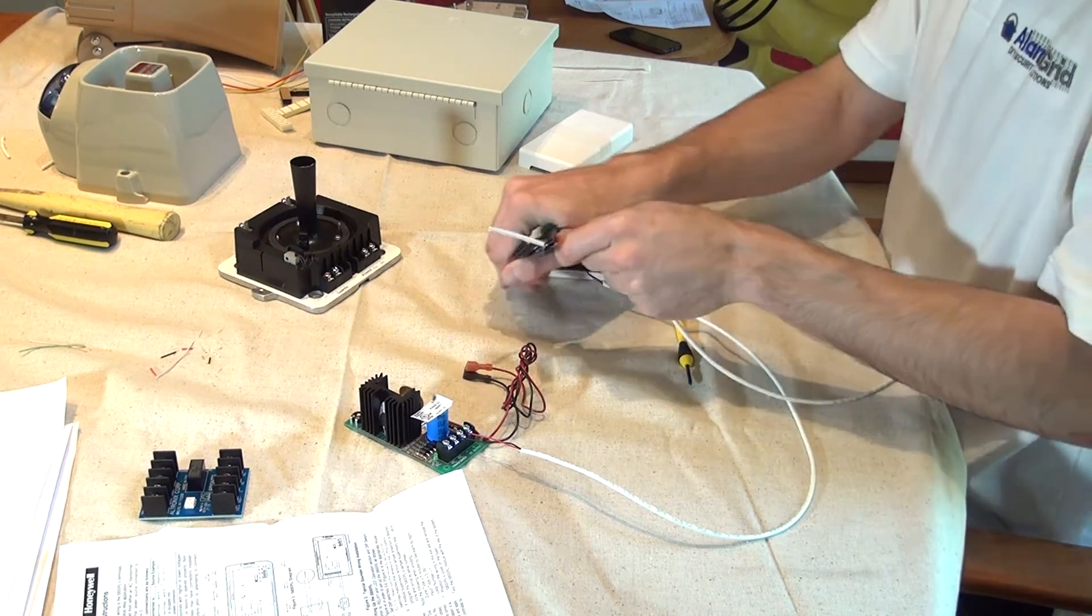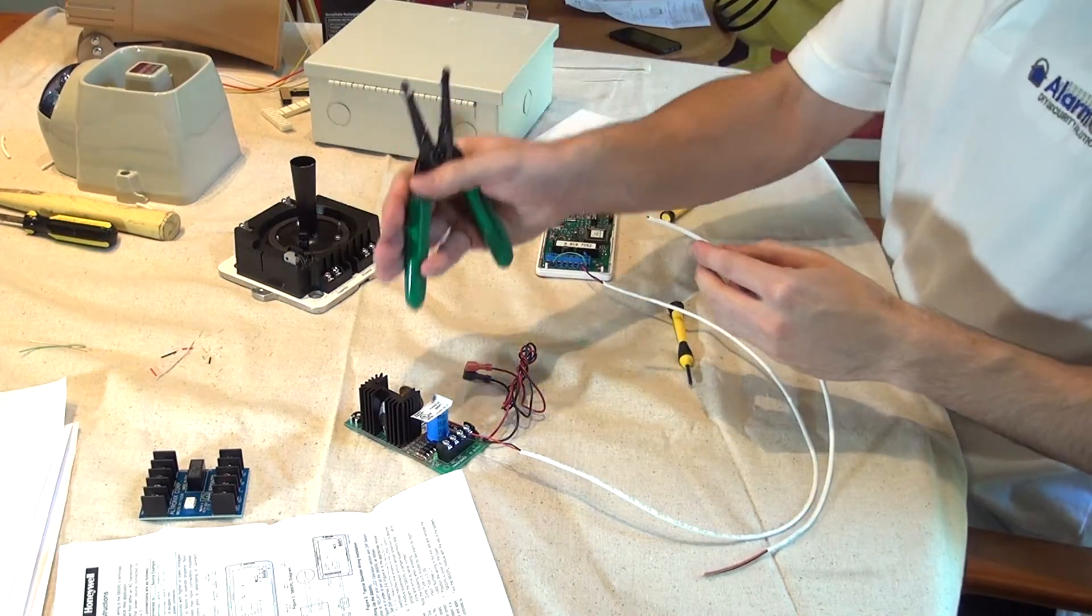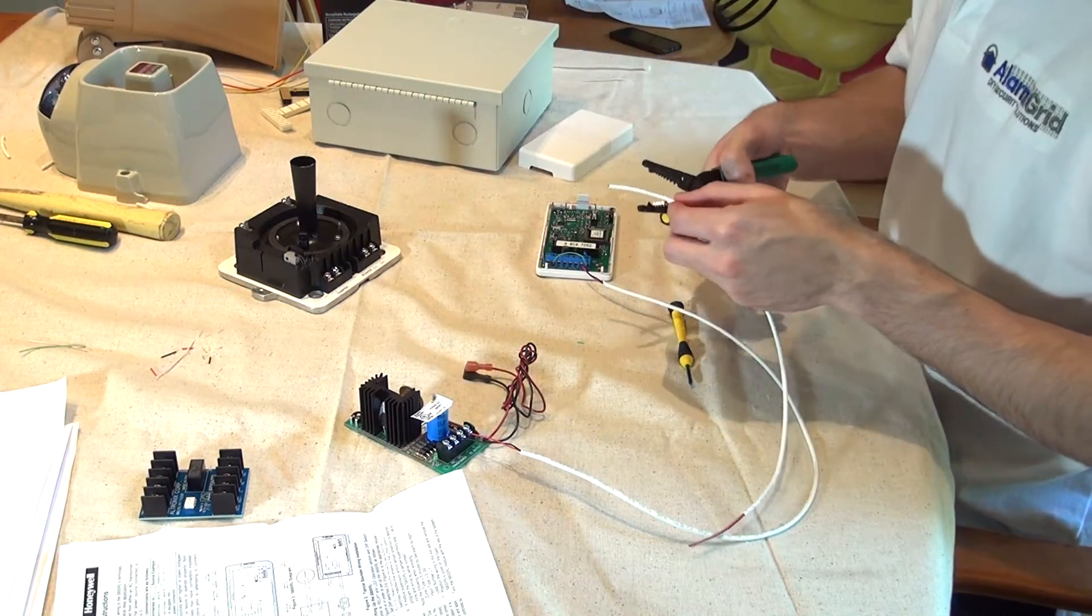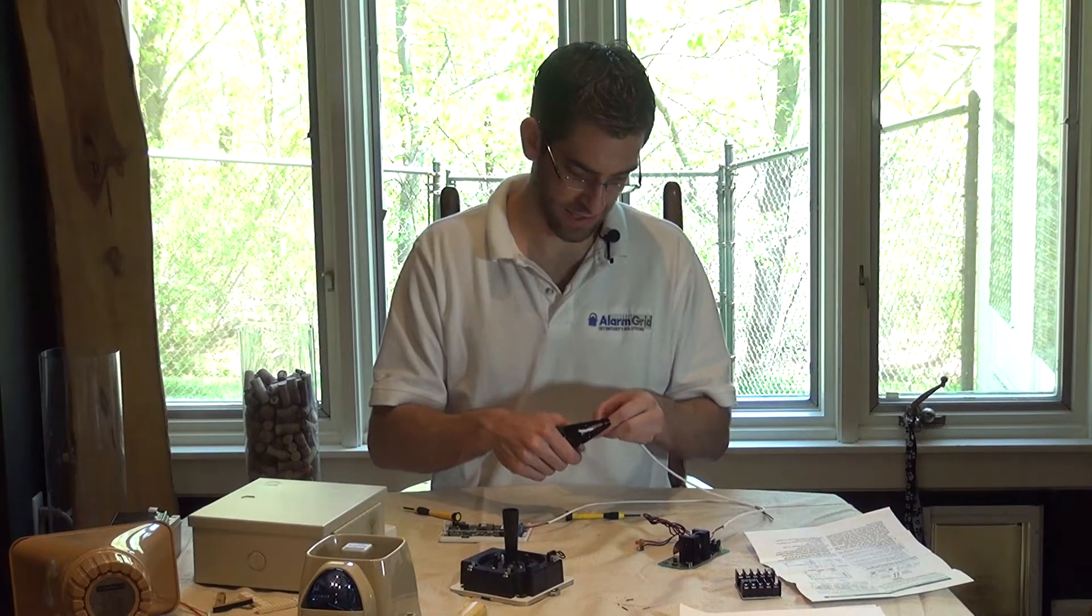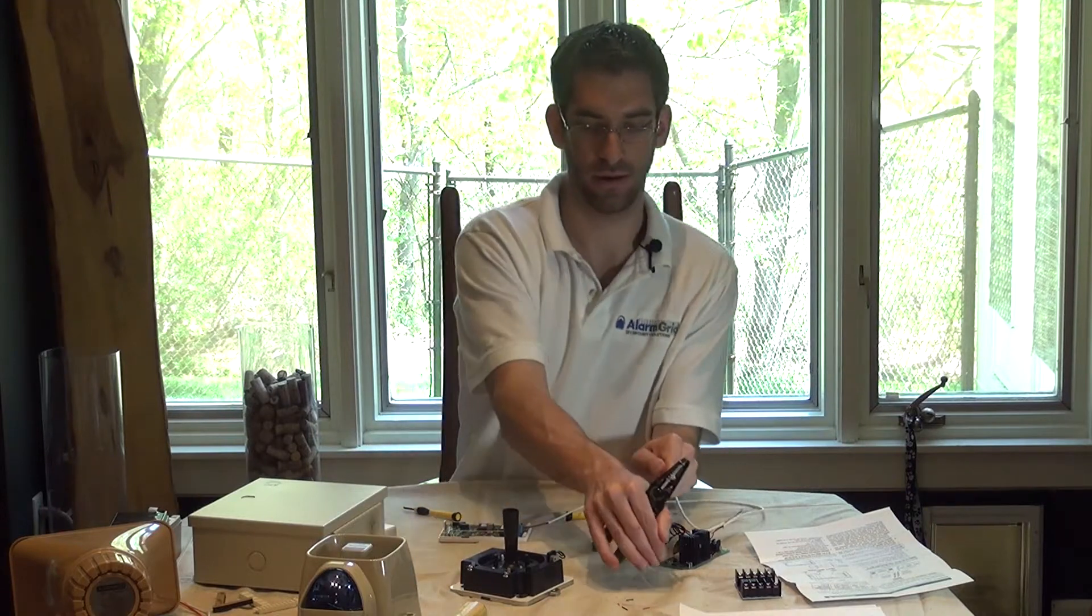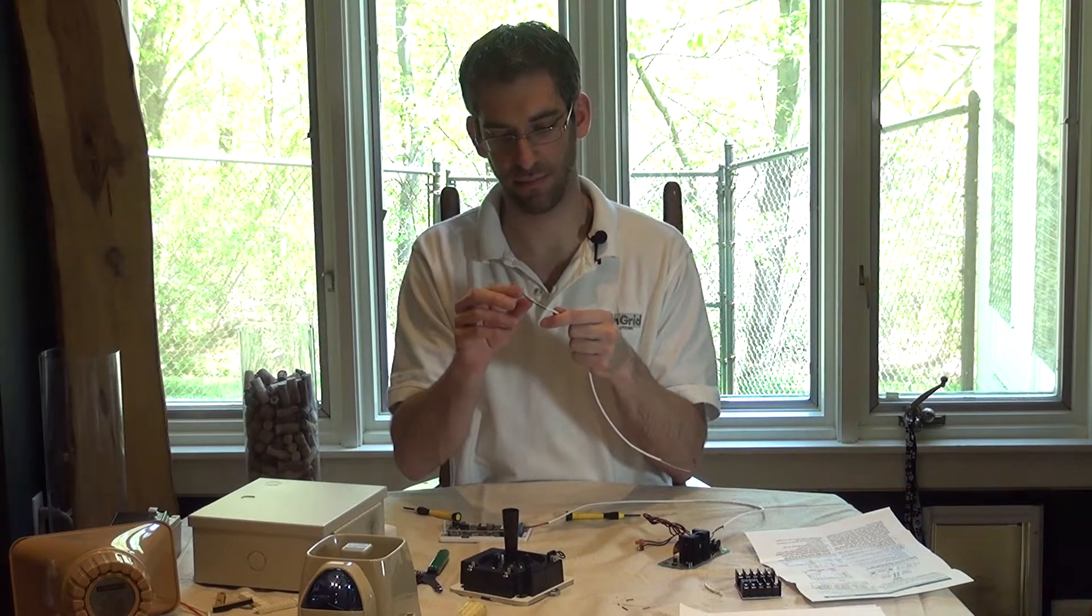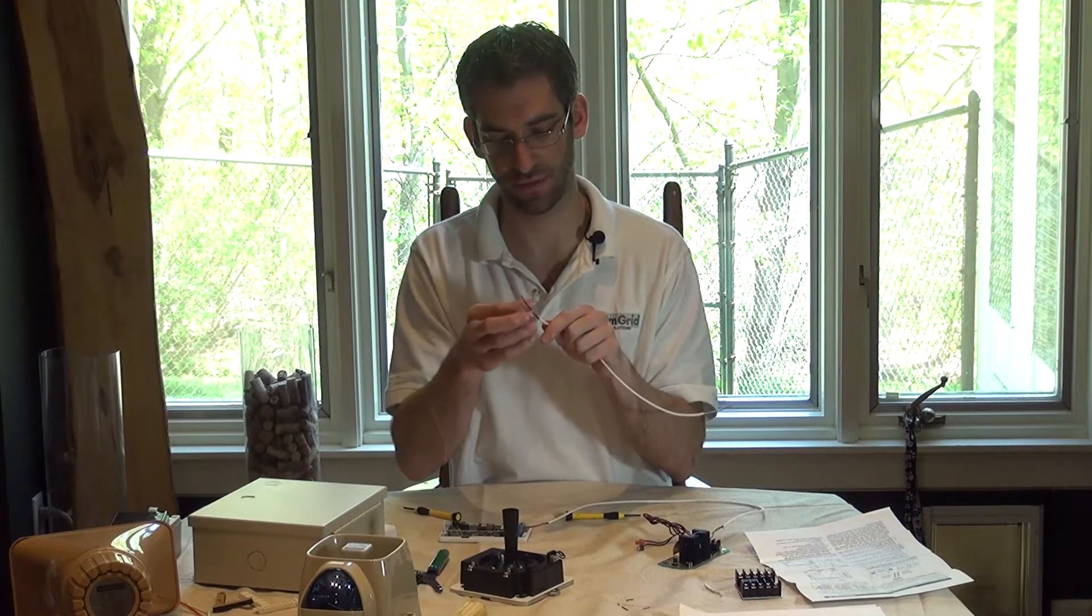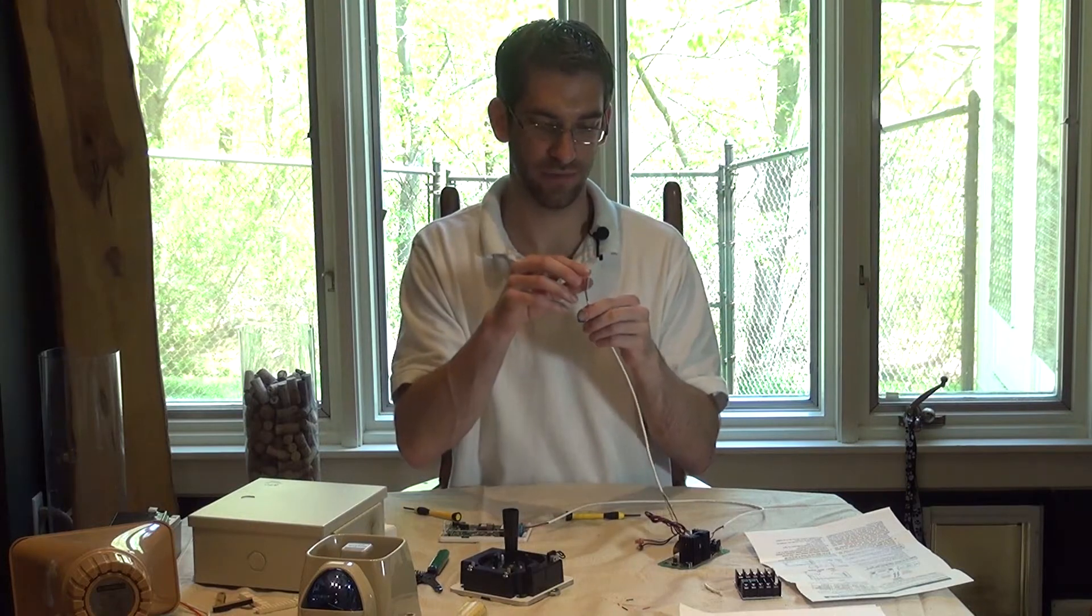You typically need two conductors or two connections from the siren. One going to the power supply and one going to the relay. Because this siren has the built-in strobe, we're going to use the four conductor wire and just double them up. One set of two wires for the strobe and one set of two wires for the siren.